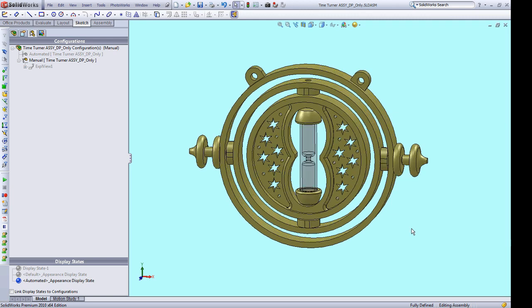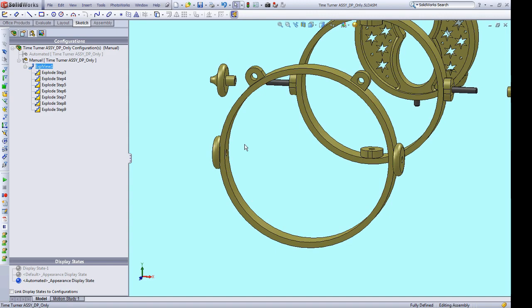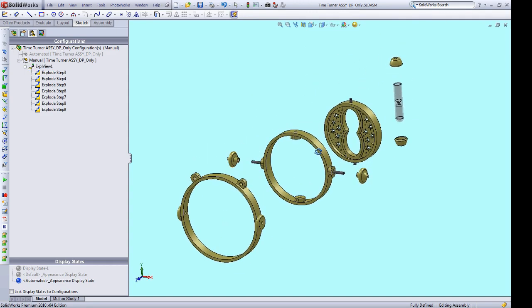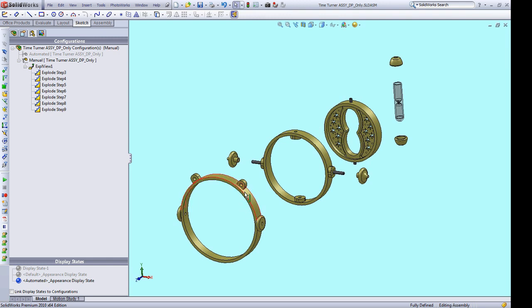If I go ahead and do an exploded view now, you can see the components in a little bit more detail. So again, this is the outer ring, the fixed outer ring, this is the middle ring, this is the inner disc that pivots about the vertical axis, and the middle ring pivots about the horizontal axis.